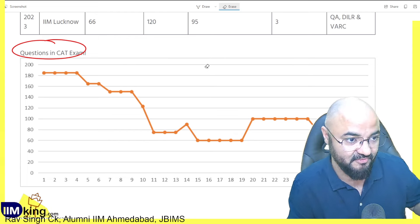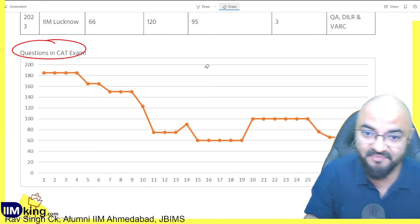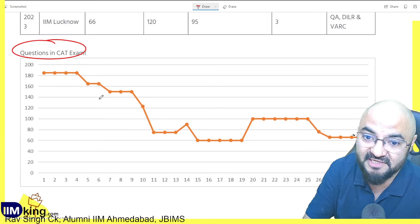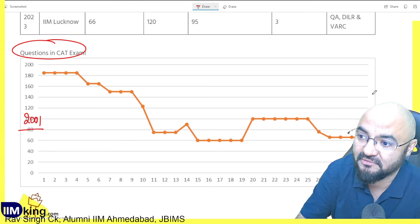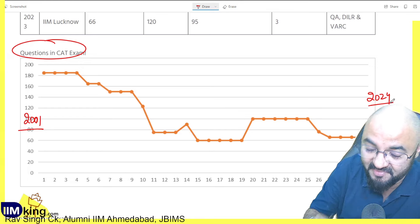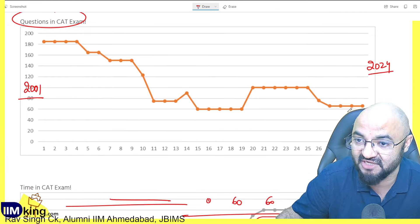So let's look at the trend. I worked on the CAT last 20 years papers, in fact last 24 years from 2001 to 2024. I analyzed the entire CAT paper, the number of questions in the exam.